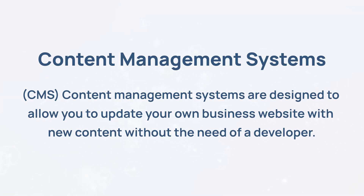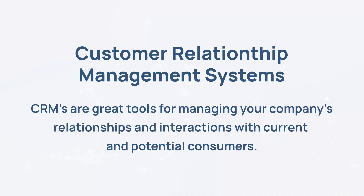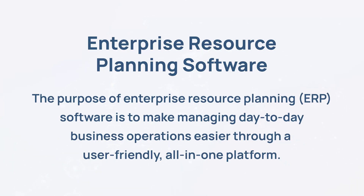Let's look at some examples. Example number one: content management systems. Also known as CMS, content management systems are designed to allow you to update your business website with new content without the need of a developer. Example number two: customer relationship management systems, or CRM for short, are great tools for managing your company's relationships and interactions with current and potential consumers. Example number three: enterprise resource planning software, or ERP for short, is to make managing day-to-day business operations easier through a user-friendly, all-in-one platform.